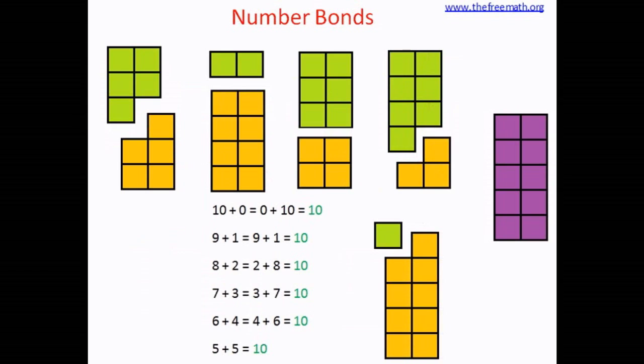So you can see that 8 plus 2 are 10, 7 plus 3 are 10, 5 plus 5 are 10. So these are all number bonds for 10.